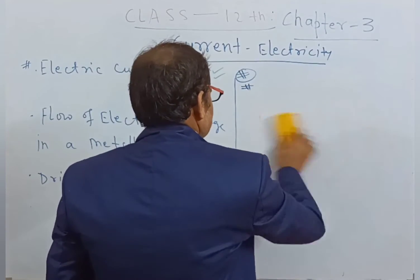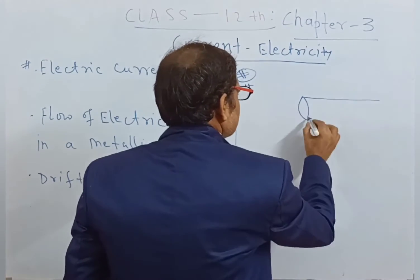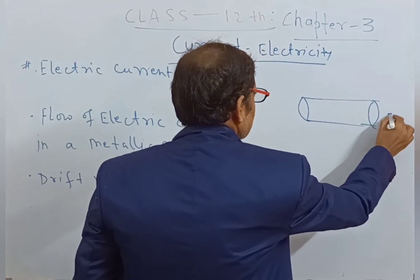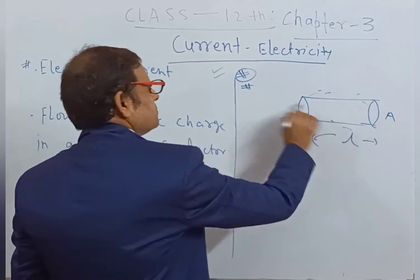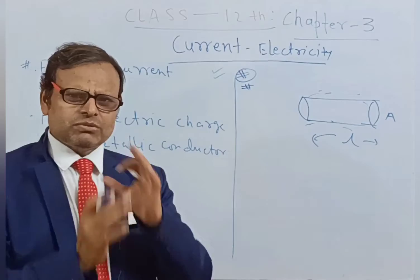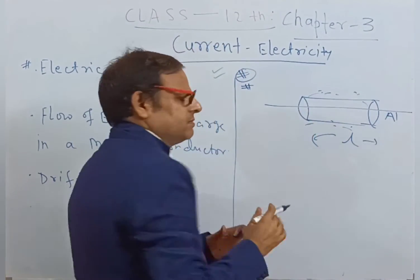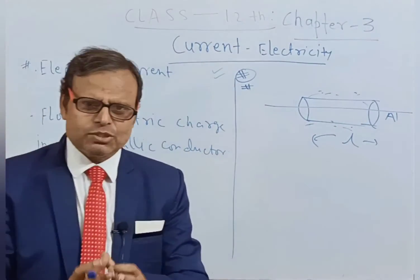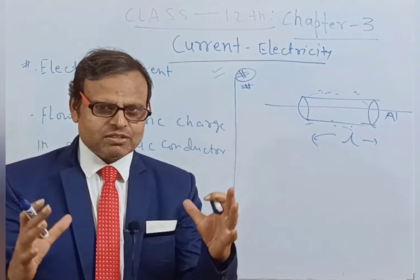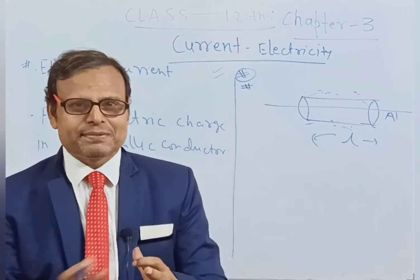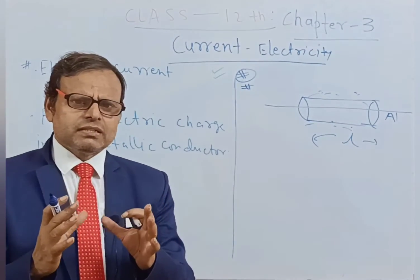Now, flow of electric charge in a metallic conductor. On a metallic conductor — suppose this is a metallic conductor with cross-sectional area A and length L — free electrons are moving around the conductor. Whenever the conductor is connected to a source of EMF, like a battery, the free electrons on the surface get drifted.